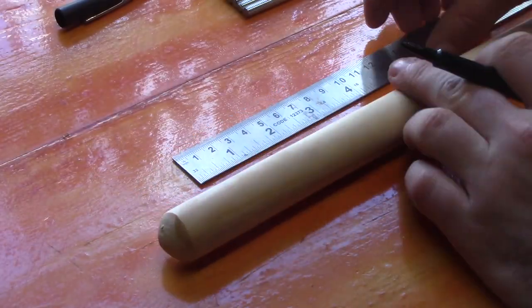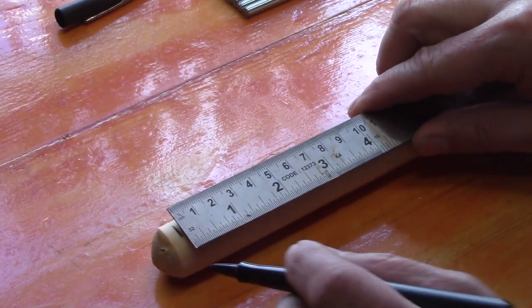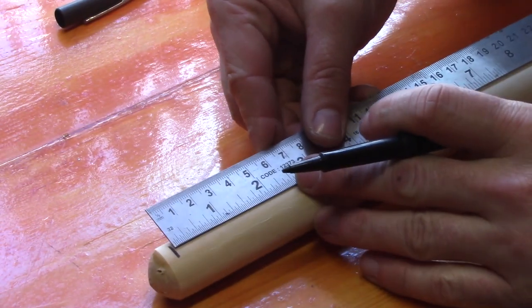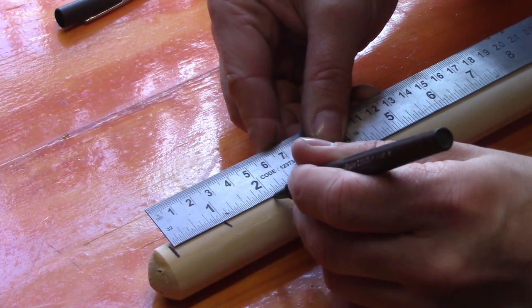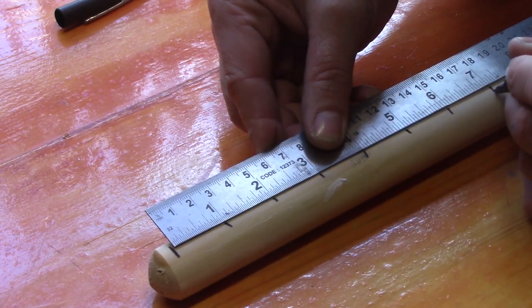Next we're going to move on to our wooden dowel here. We're going to put a mark just before the end because we're not going to use this piece because it's rounded over, and then mark an inch all the way down until we get the 20 pieces that we need.